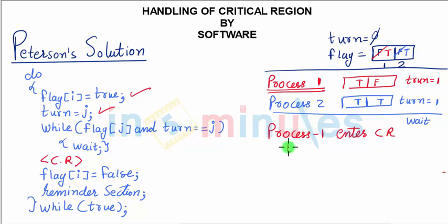The turn would be made to 2, making Process 2 capable of entering. But when Process 1 gets out, until that time Process 2 would be waiting.